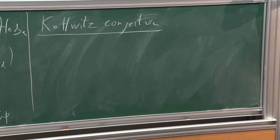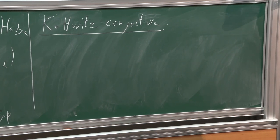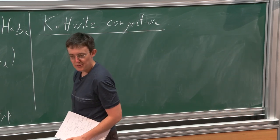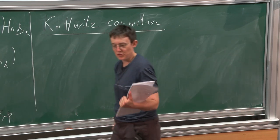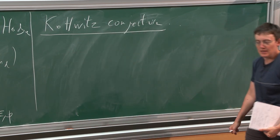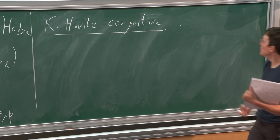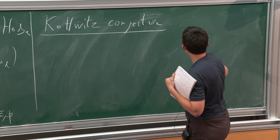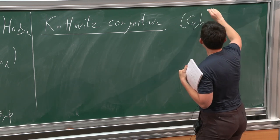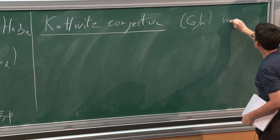Now that I've confused everybody about the integral models, let's talk about the Kottwitz conjecture. The Kottwitz conjecture is about the cohomology of a Shimura variety. Let's take (G, H) and I'm going to restrict to the compact case, but you can ask me about the non-compact case — not much changes.